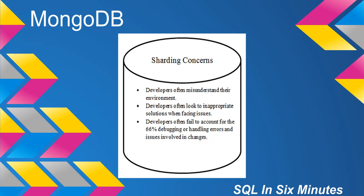We know that we can shard on a per-collection basis. One of the things to keep in mind is that when we do shard, we are going to shard by a key. The shard key is essentially the indexed field in a collection that we're going to be sharding by. It absolutely must exist in every single document in the collection that we're discussing.